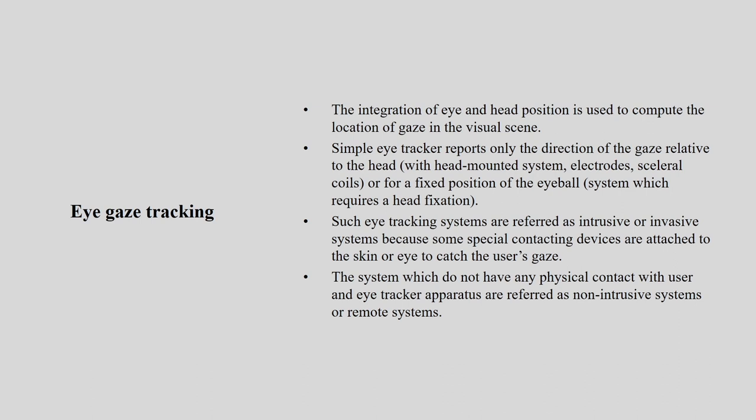A simple eye tracker reports only the direction of gaze relative to the head or for a fixed position of the eyeball. Such eye tracking systems are referred to as intrusive or invasive systems because special contacting devices are attached to the skin or to the eye to capture the user's gaze. Systems that do not have any physical contact with the user are referred to as non-intrusive or remote systems.